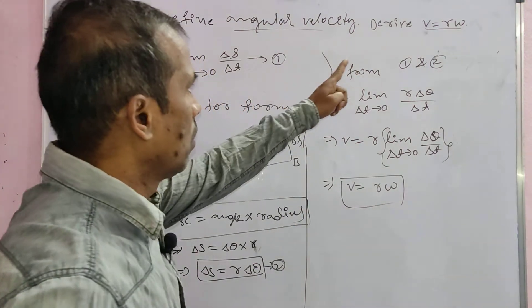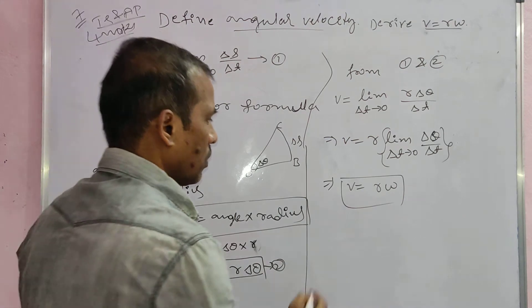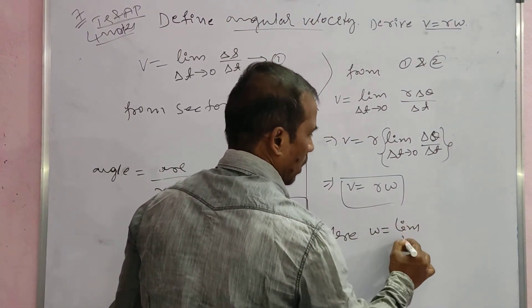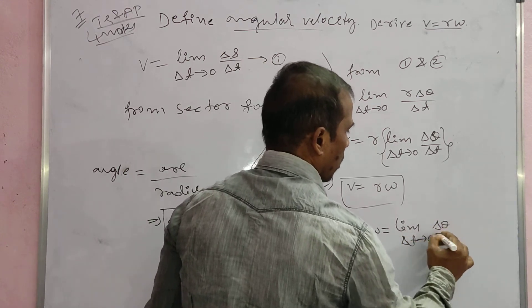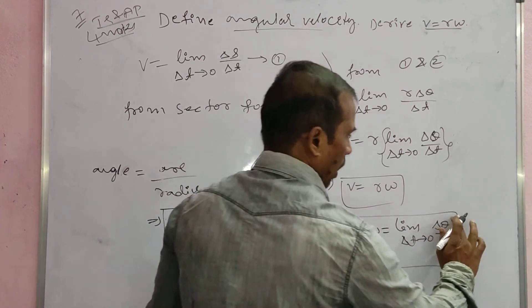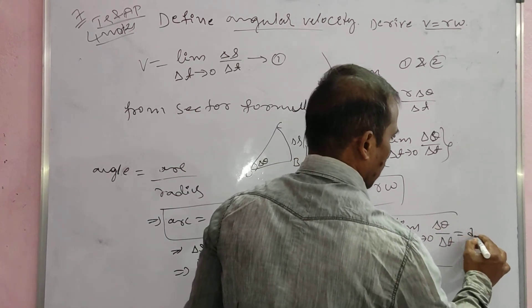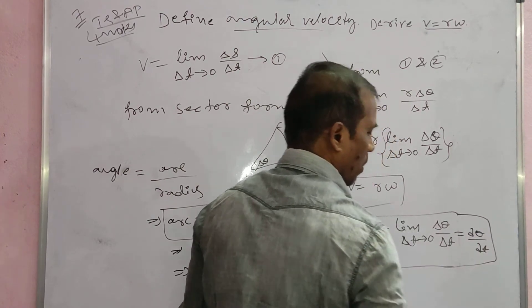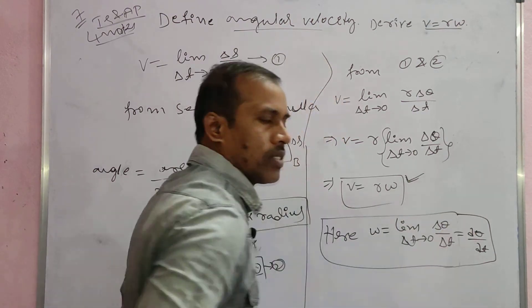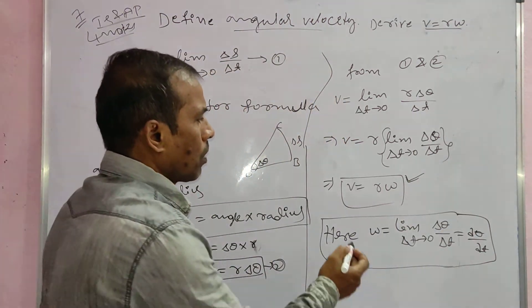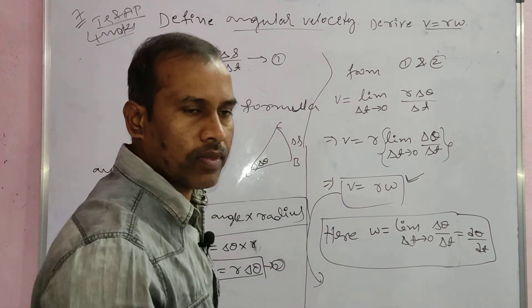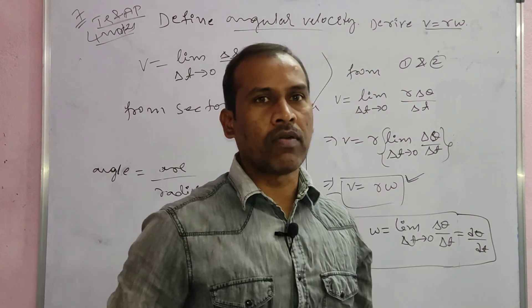So V is equal to r omega. Since omega equals d theta by dt, this is the angular velocity. This is the answer. This is a four-mark question. Linear velocity and angular velocity - these are vector quantities. Both linear velocity and angular velocity are vector quantities.